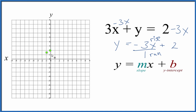So we go to our y-intercept and we're going to rise negative 3. If it was just 3 we'd go up 1, 2, 3 — but it's negative 3, so the rise actually goes down 1, 2, 3, and then we run 1 to the right. Let's do another point: we go down 1, 2, 3, then 1 to the right. You can see we have a line here.